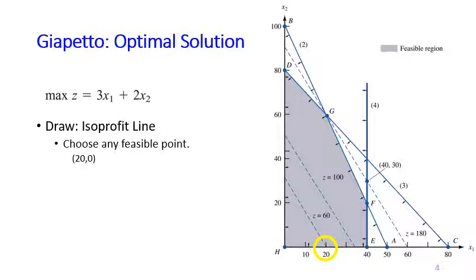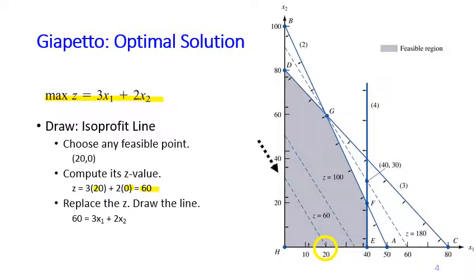First you choose any feasible point in the feasible region. For example, we choose (20,0). And then we compute its z value. So you plug in 20 and 0 to the objective function and then you obtain z equals 60. And then you replace z with this number. So now 60 equals 3x1 plus 2x2. And then you draw this line which looks like that.